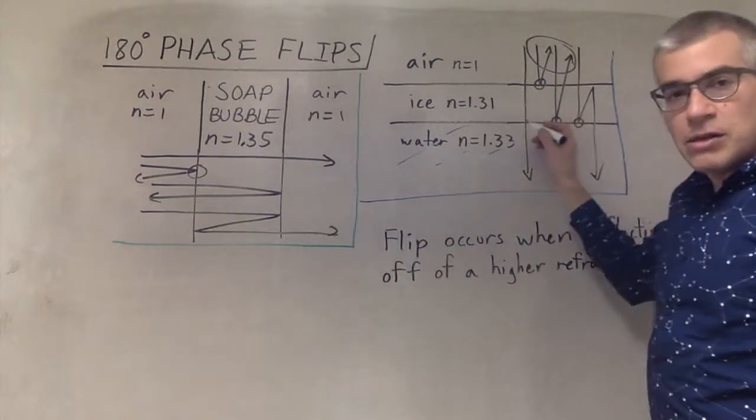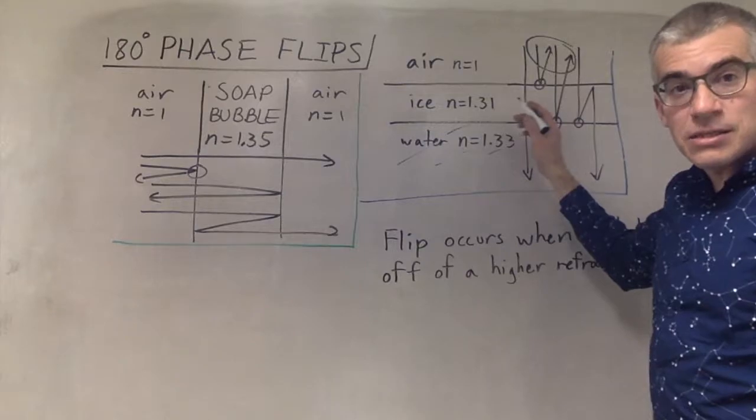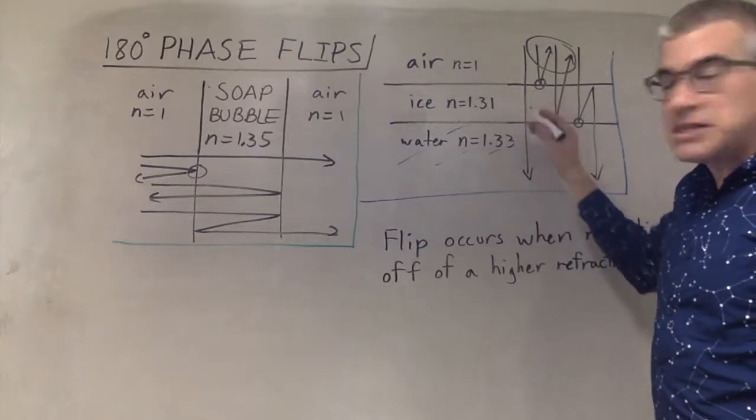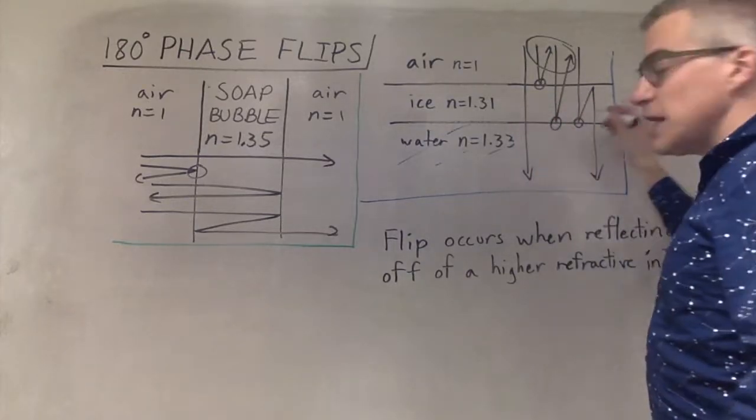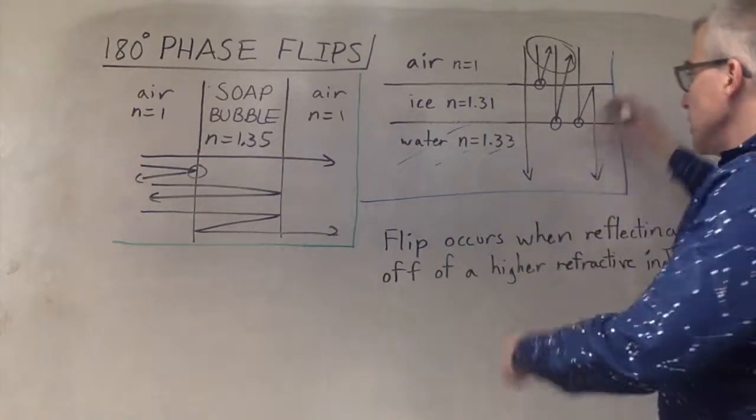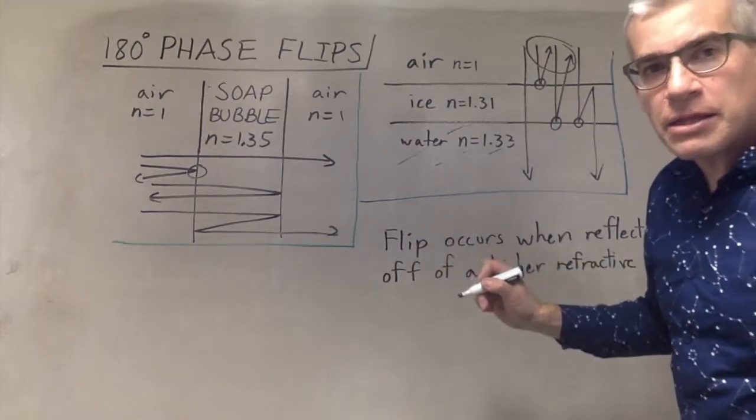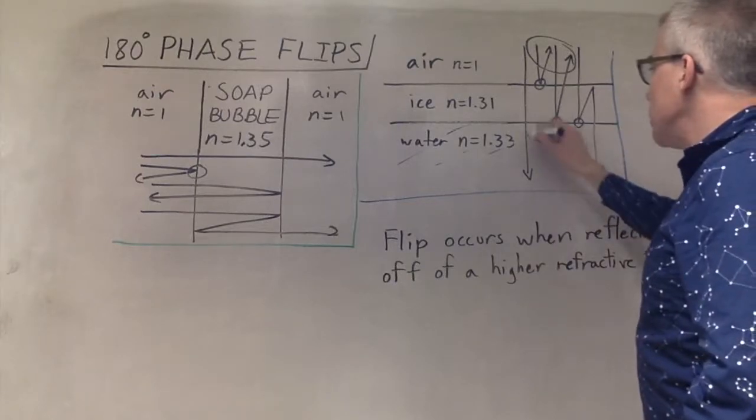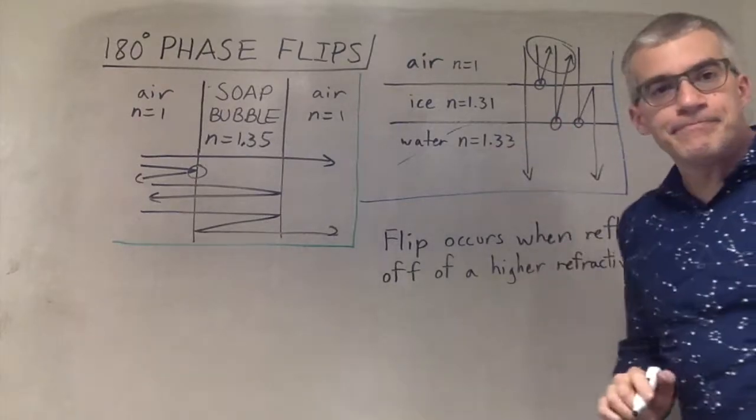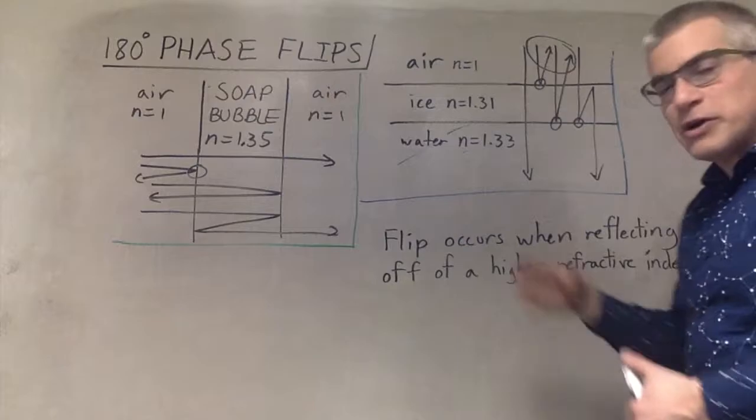So very thin, it would all reflect. Everything would reflect if it's super thin, and nothing would transmit. If it's thick enough, so you can fit in half a wavelength, then it would be transmitting. And of course, that's going to vary with the wavelength.